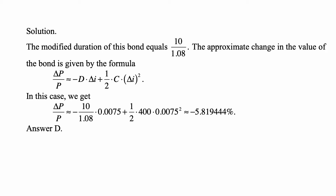So the change in price divided by the price is minus 10 over 1.08 times 0.0075, plus one half times 400 — the convexity that we are given — times 0.0075 squared. That is approximately negative 5.81944 percent, which is answer D.